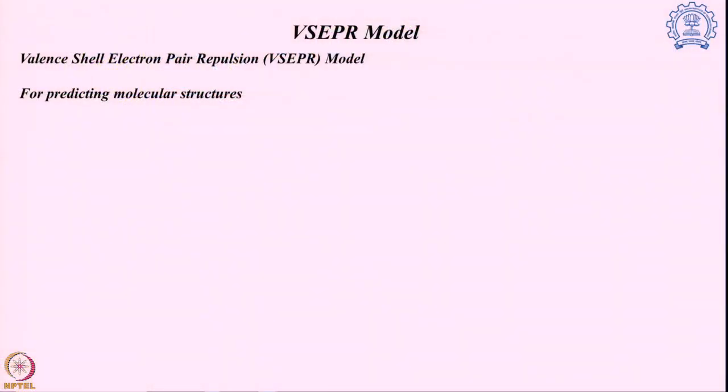Welcome to this segment where we are going to discuss how we can use a model to predict the molecular structure of different compounds. This particular model is known as the VSEPR model, which is an acronym for the valence shell electron pair repulsion model.